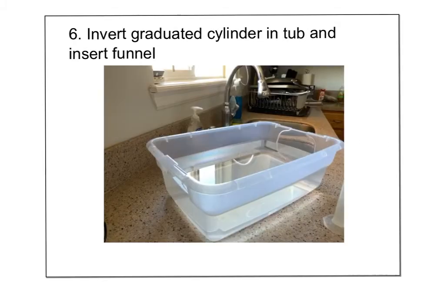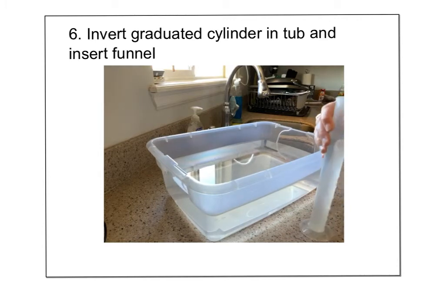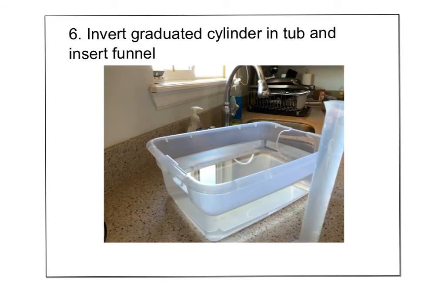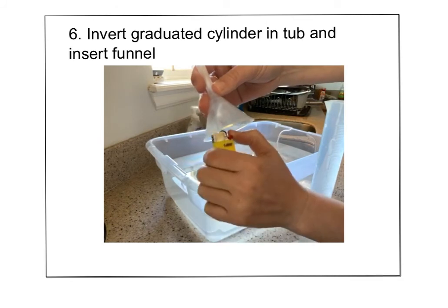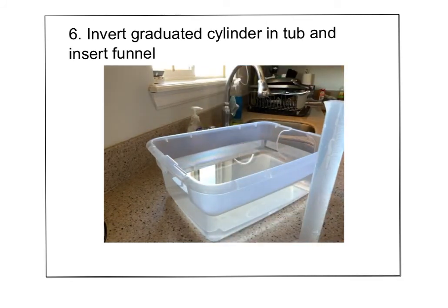Now I'll invert the graduated cylinder into the tub with no air bubbles, keeping it entirely filled with water. Unlike the video where a spray can with a long hose was used, this lighter has no hose, and I don't have a partner. So I'm going to use a funnel inside the cylinder so I don't need perfect aim when releasing the gas.